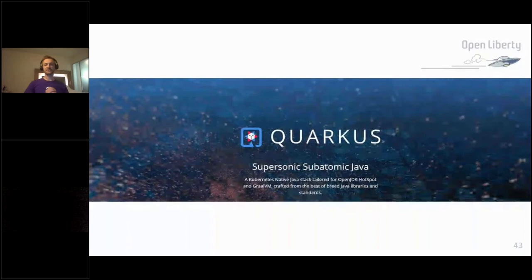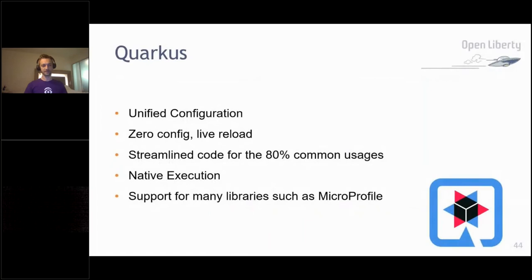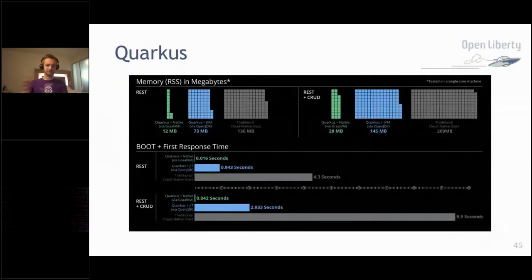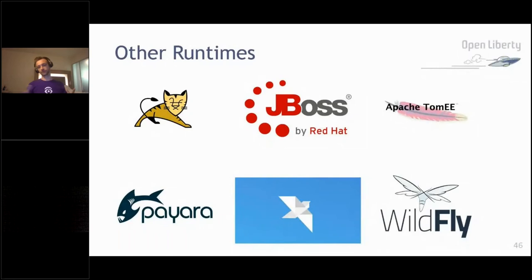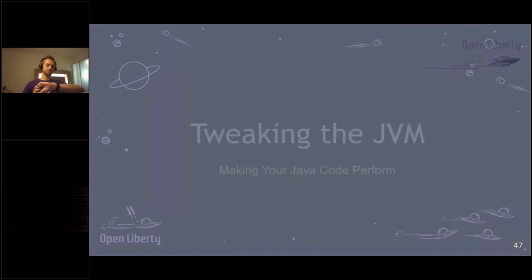Now moving on to Quarkus — an amazing runtime from Red Hat. It has unified configuration making it very simple to get going, zero config with live reload — very similar to Open Liberty's dev mode. It has native execution support with GraalVM and support for many libraries such as MicroProfile and Spring. Here are some performance stats — using Quarkus with GraalVM Native, you can get very very efficient startup and response times, which is really key for things like functions-as-a-service. There are lots of different runtimes available, so figure out what you're building and choose accordingly.